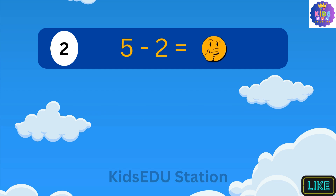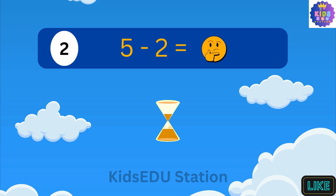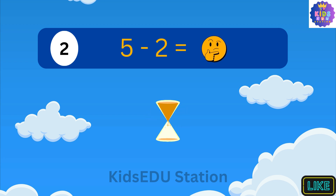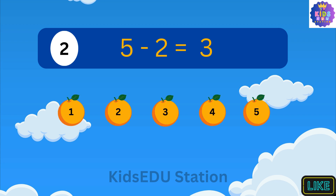What is 5 minus 2? 5 minus 2 is 3. Imagine you have 5 oranges. You ate 2 of them. Now you have 1, 2, 3 oranges left.